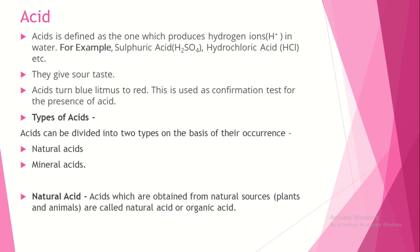In class 8 you already studied the basics of acids. Acids are generally sour in taste — the sour taste is because of acid. The important definition is: acids are defined as substances which produce hydrogen ions in water. So when acid is dissolved in water, hydrogen ions are produced. Examples include sulfuric acid (H₂SO₄) and hydrochloric acid (HCl) — you can see hydrogen is present in both.